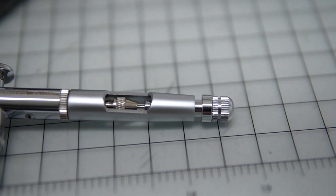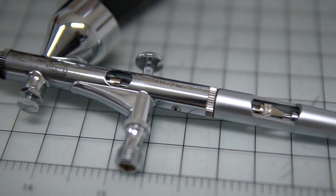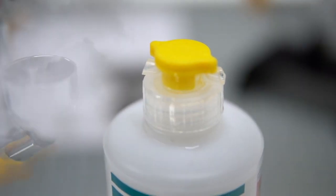So the Premium is a finer airbrush, it's 0.2mm. So this is your 0.3 spray and this is your 0.2 spray.